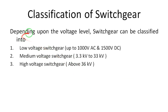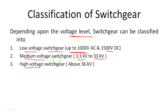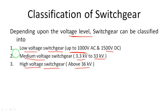Another classification is based on voltage level. There are three types: low voltage switchgear, medium voltage switchgear, and high voltage switchgear. Low voltage switchgear is used for up to 1000 V AC. Medium voltage switchgear covers the range of 3.3 kV to 33 kV. For beyond 36 kV, high voltage switchgear is used. Each of these three systems includes switching, controlling, and protecting parts.